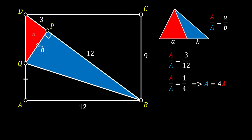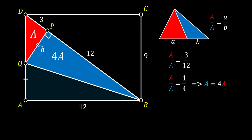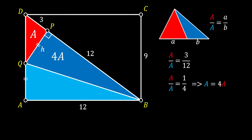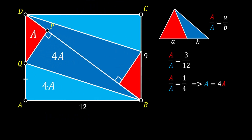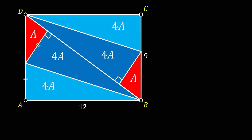Labeling the area of the red triangle as A, the area of the blue triangle is 4A. Since we already proved that triangles PQB and QAB are congruent, the area of triangle QAB must also equal 4A. Now, the big triangle DAB is half of our rectangle, so we can mirror the image and have the same areas on the other side. The area of the whole rectangle equals 2 times the sum of the red, blue, and light blue triangle areas, which works out to 18 times the area of our small red triangle.